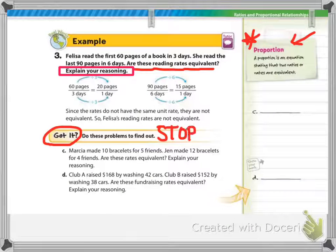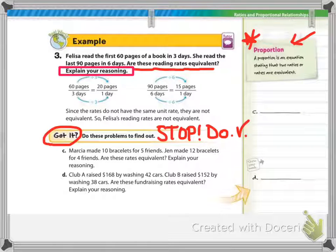All right, the next slide, we're talking about example 3. Felisa read the first 60 pages of a book in 3 days. She read the last 90 pages in 6 days. Are these reading rates equivalent? And then you have to explain your reasoning.